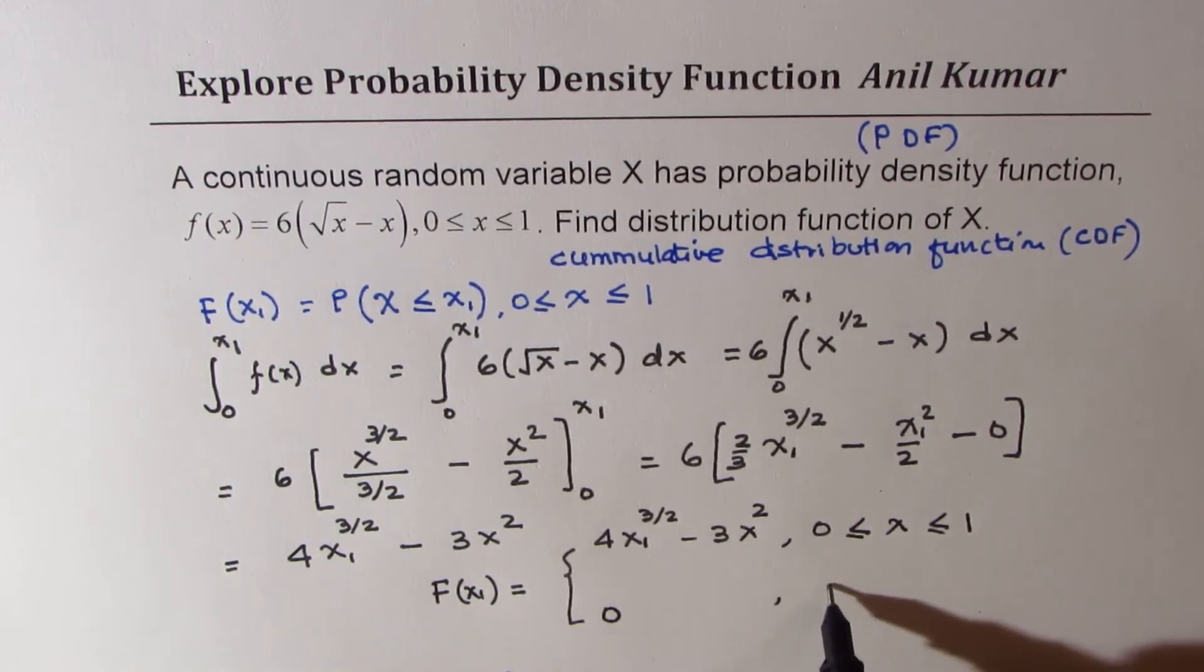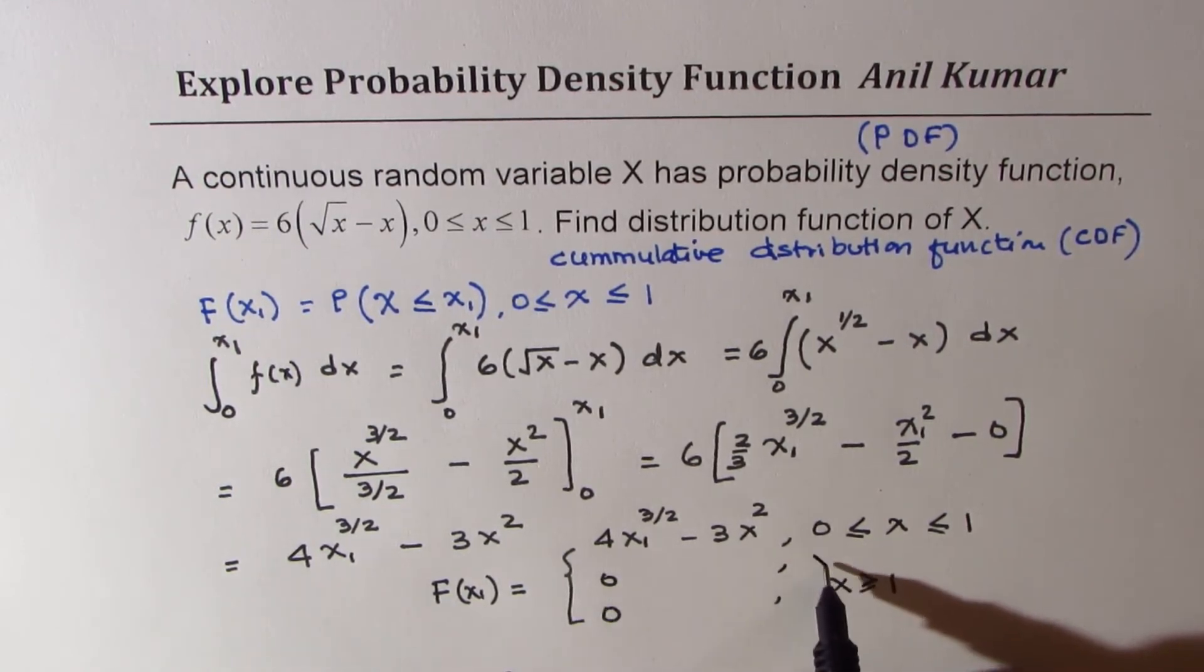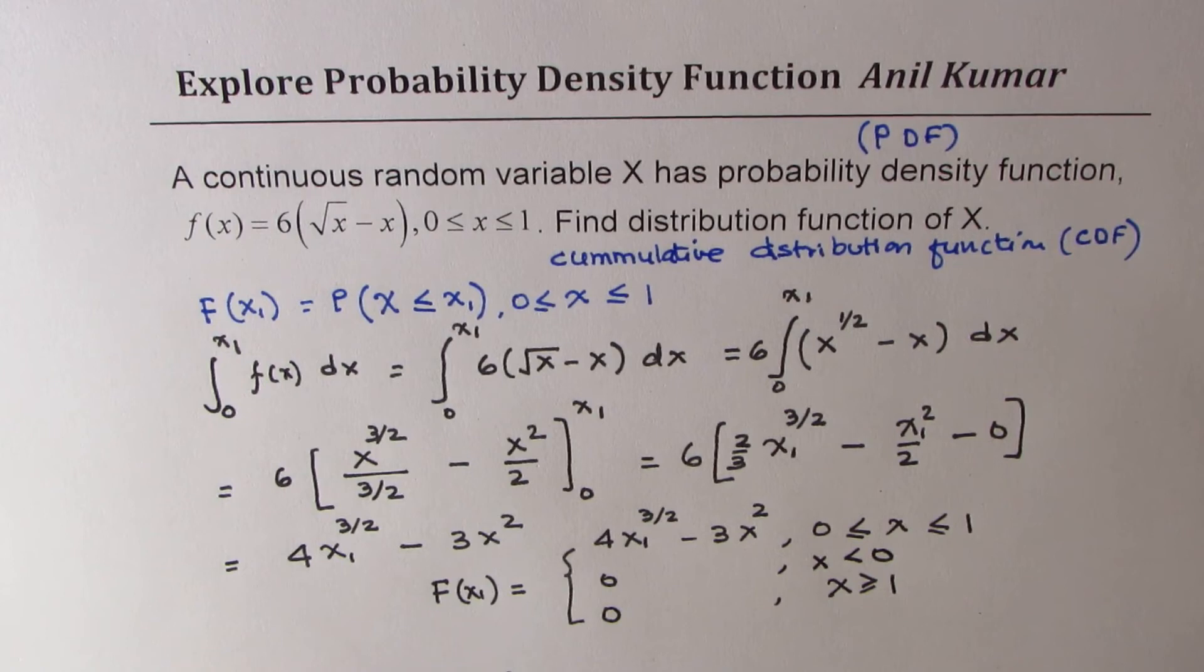So we can say for x greater than or equal to 1, and also it is 0 for x less than 0. So elsewhere it is 0. That is how you can get your distribution function.